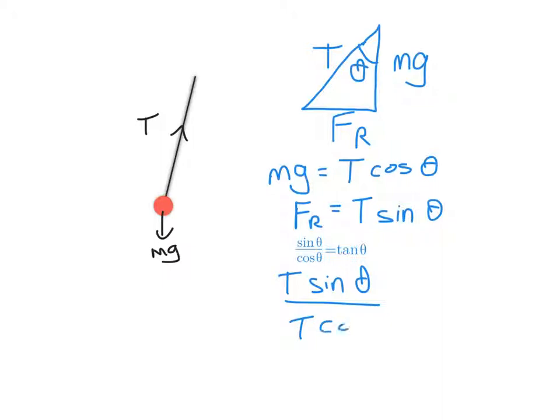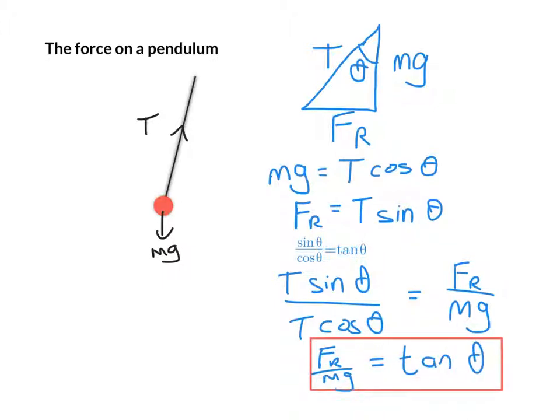I get T sine theta over T cos theta will be equal to FR divided by mg. So then that means that I can rewrite this triangle by saying that FR over mg is equal to tan of theta. You might also recognize that is just a nice simple trig identity as well.